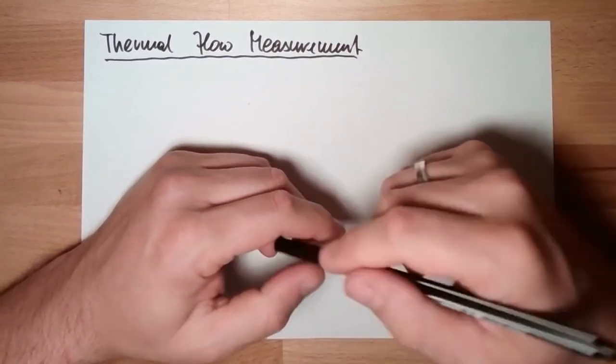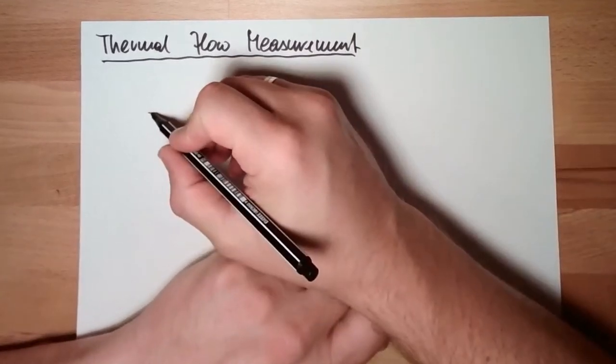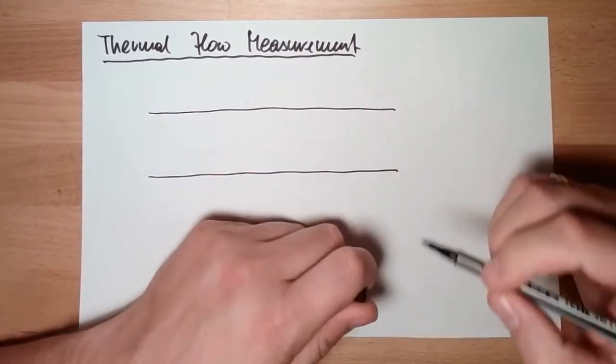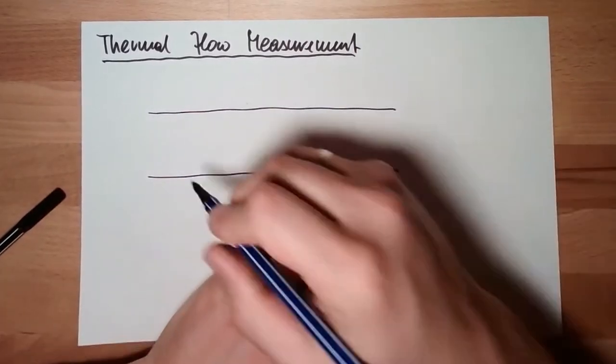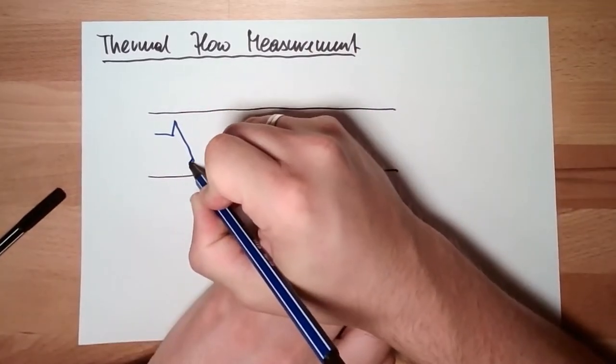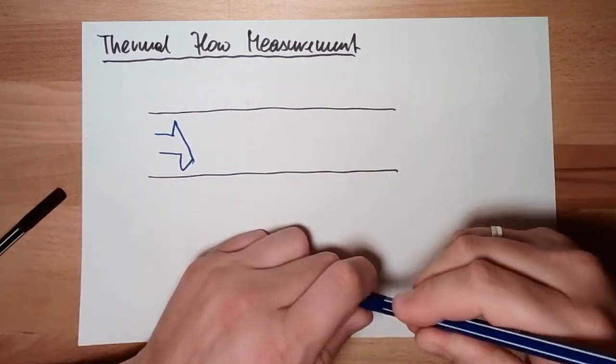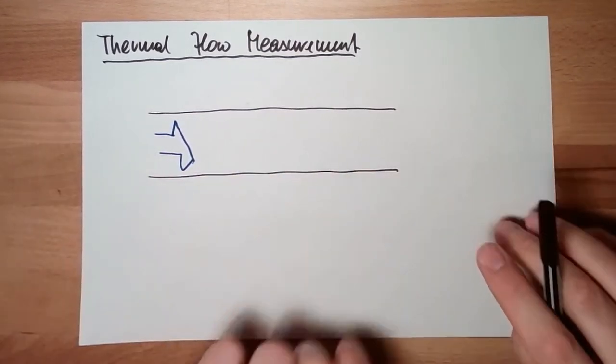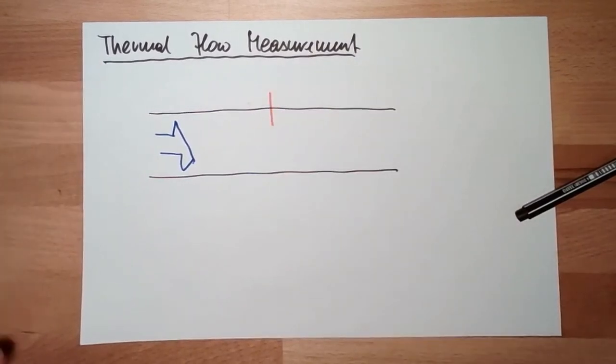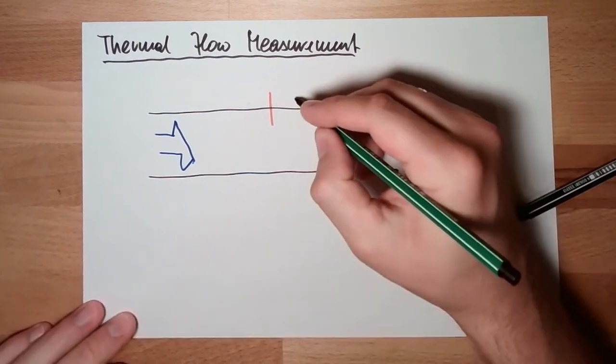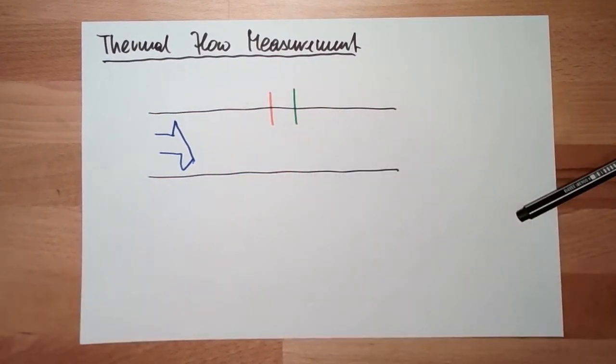If there is my tube with my flow, there is one measured sensor which is heated, and for reference purposes there is one sensor which is not heated to measure the temperature of the liquid itself.